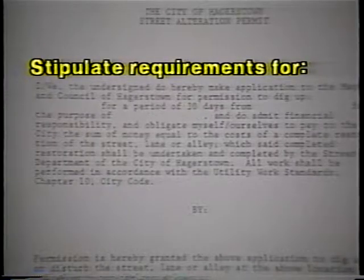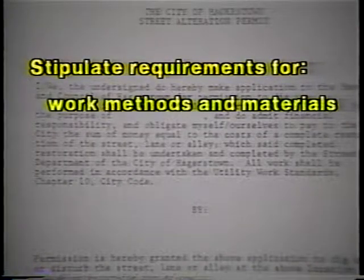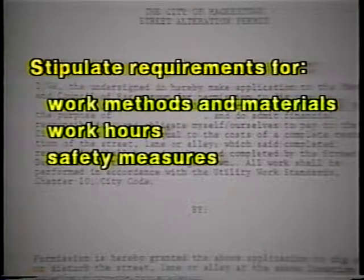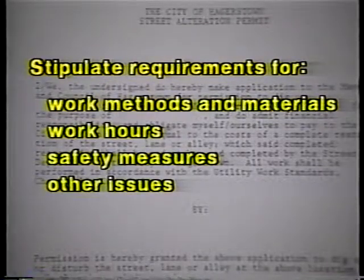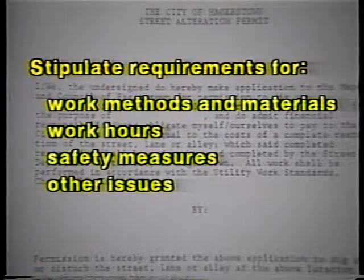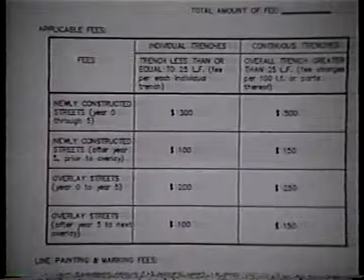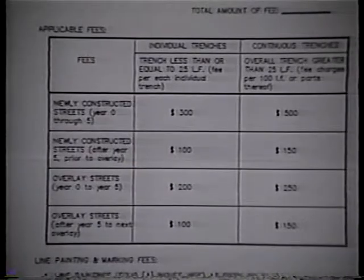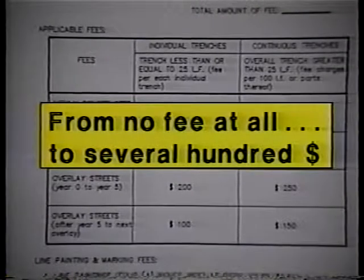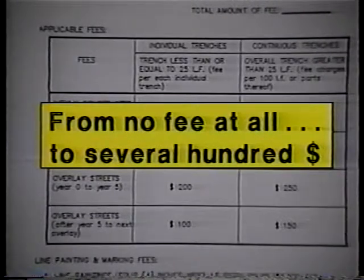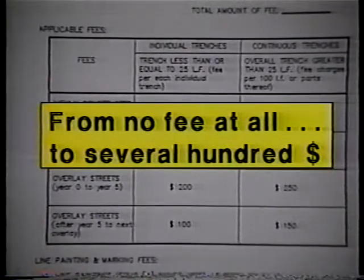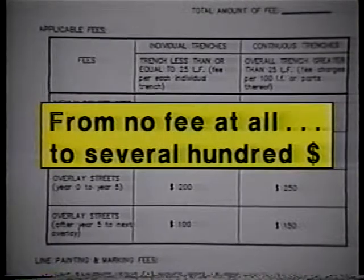Permits may stipulate requirements for work methods and materials, work hours, safety measures, and other issues. They bind the utility to comply with conditions that the agency deems important. The agency may charge anywhere from no fee at all to one of several hundred dollars, to cover as little as handling costs only, or as much as inspection services and restoration work that it may provide.